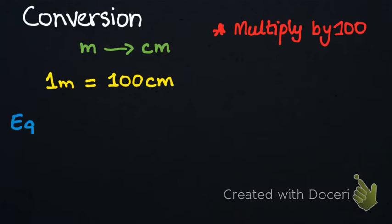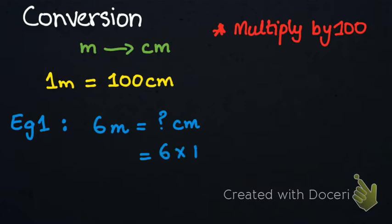For example, we have 6 meters and we have to convert it into centimeters. So what we are going to do is simply multiply 6 by 100, and we will get 600 centimeters. So that means in 6 meters we have 600 centimeters.